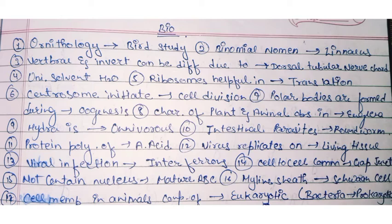Mature RBC does not contain any nucleus, which is why it does not utilize oxygen for its own function. Myelin sheath is made up of Schwann cells. The cell membrane in animals is composed of eukaryotic-type structures, whereas bacteria have a prokaryotic cell membrane.